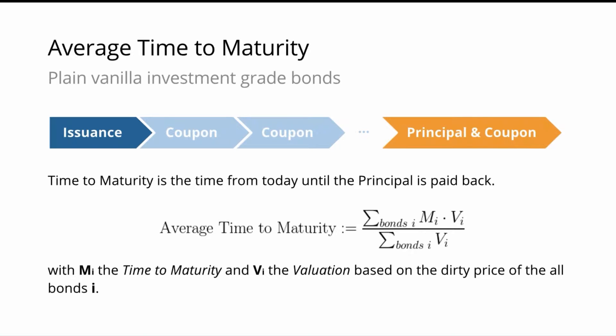For portfolios with only plain vanilla bonds, it's a good measure for interest rate sensitivity. Of course, there are other more advanced sensitivity analytics like duration, but we do not want to touch that complexity today. So we will stick with that. The only problem — or actually a very big problem — is that when it comes to more complex bonds, this statistic is quite misleading.